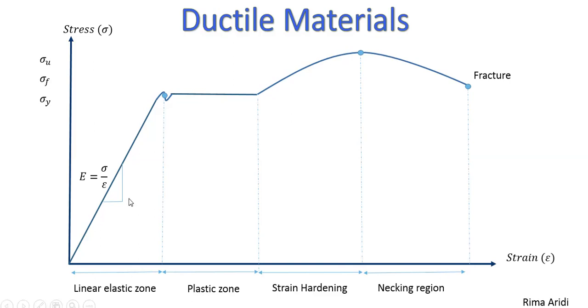Now, this graph indicates that ductile material goes through more than one zone. It goes through the linear, elastic, plastic, strain hardening, and necking before it fractures.